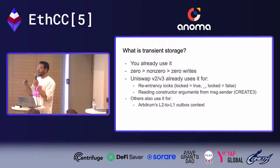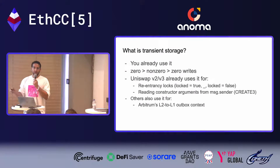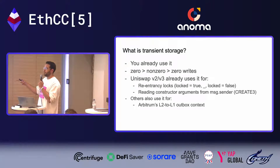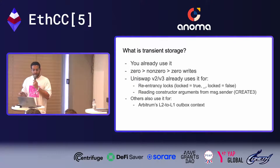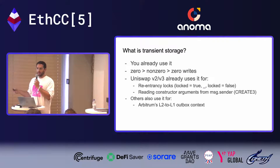You probably already use transient storage — it's when you write a non-zero value to a storage slot and then write it back to zero before the end of the transaction. The most common use case is re-entrancy locks, often a modifier that sets locked to true, then false. We use it for Uniswap pools and L2 rollups like Arbitrum as well. It gets a special classification because doing a zero-to-nonzero-to-zero write earns you a gas refund from the EVM.